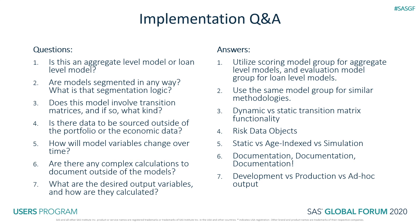While Model Implementation Platform simplifies many CECL model implementation components, there are still important design questions to consider. The platform refers to individual equations as model objects. A model group contains model objects as well as the code that uses them to calculate outputs. There are two types of model groups: scoring and evaluation. Aggregate-level methodologies can be incorporated into scoring model groups, whereas loan-level methodologies use evaluation model groups. This allows aggregate-level calculations to execute for each distinct aggregate-level value, like customer ID, for greater coding and runtime efficiency than if they were run for each loan.